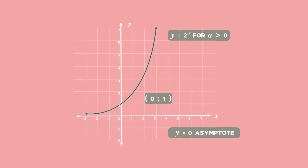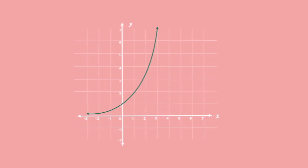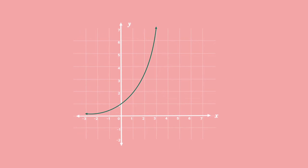The exponential function is a one-to-one function, and the inverse of an exponential function will also be a one-to-one function. We can find the inverse by reflecting the graph over the line y equals x. The reflection shows us the inverse graph of the exponential graph.